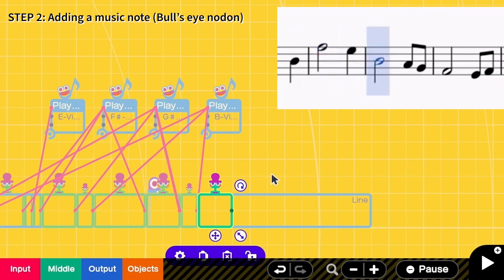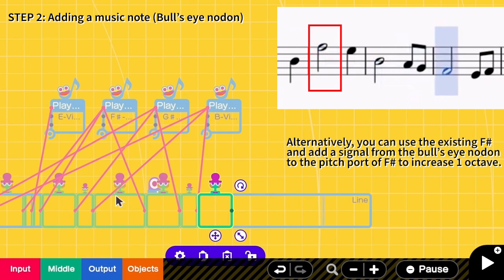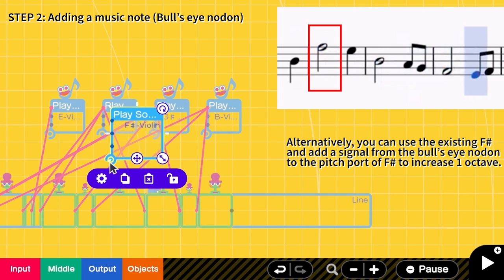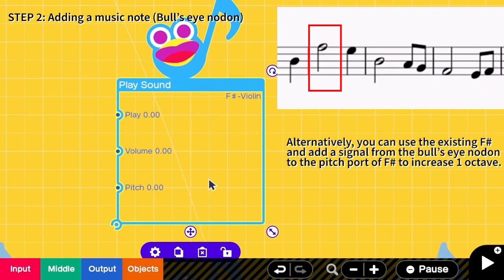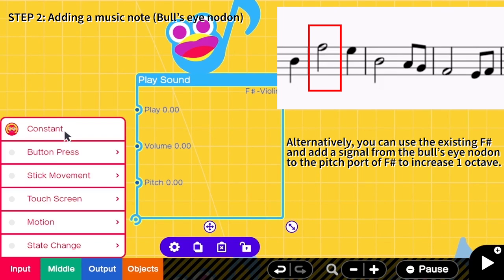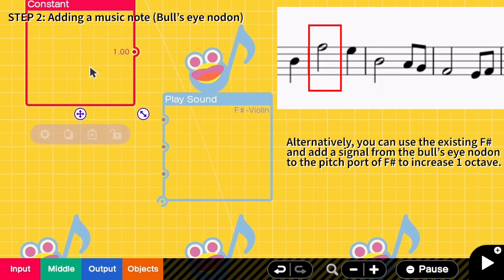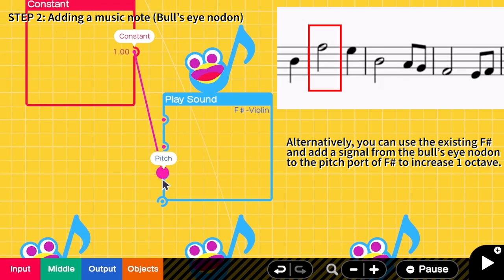Next is the high F sharp note, so here I need to copy the F sharp note here but I need the pitch to be higher like one level right. So here I add a constant and then add one to the pitch. Then I connect this one to the play port.